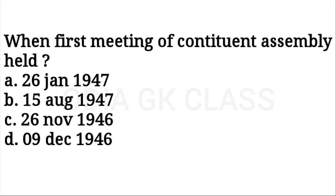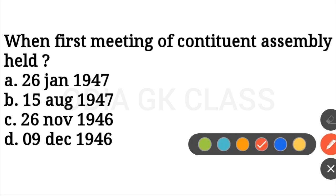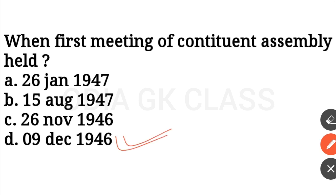When was the first meeting of the Constituent Assembly held? The first meeting of the Constituent Assembly was held on 9 December 1946. The Constitution was adopted on 26 November 1949.